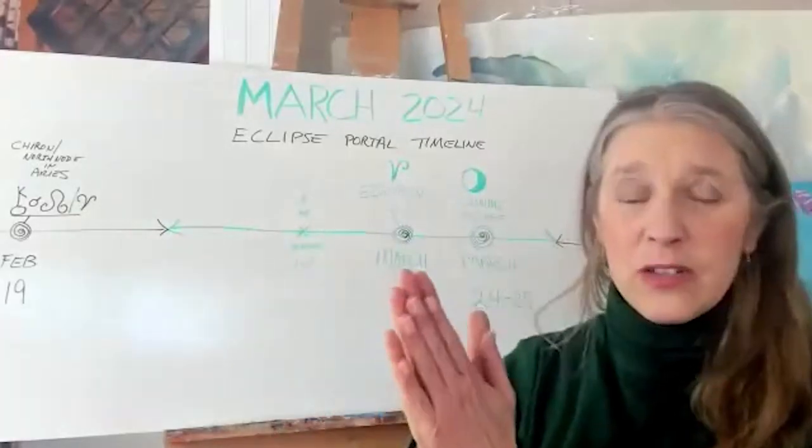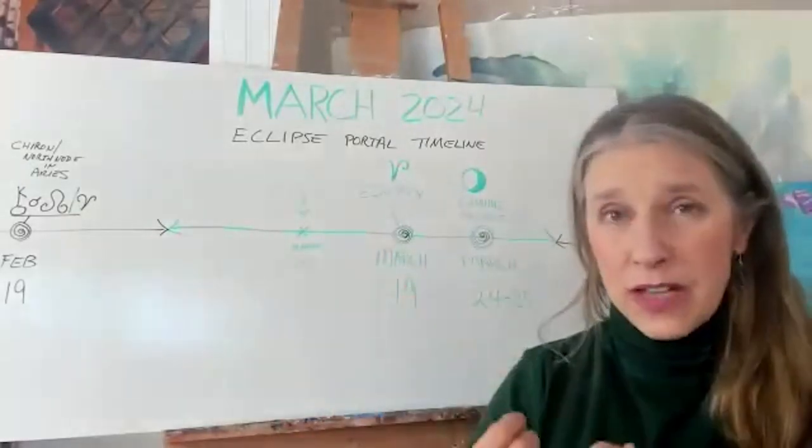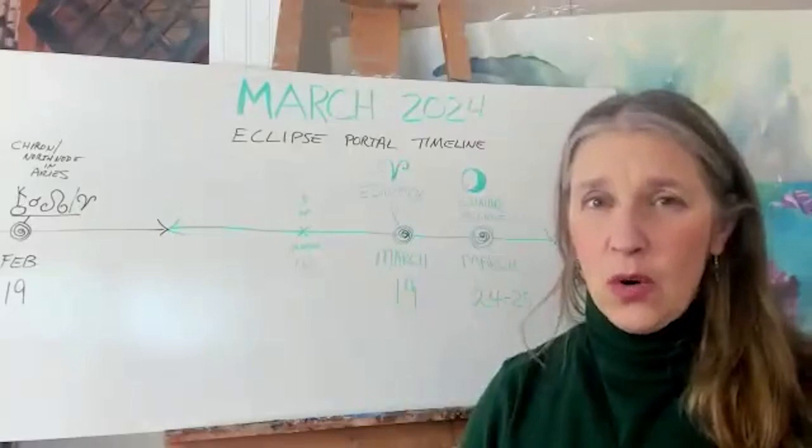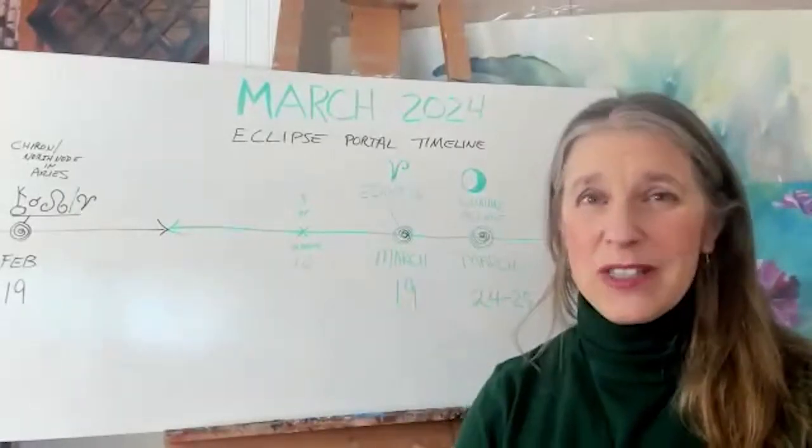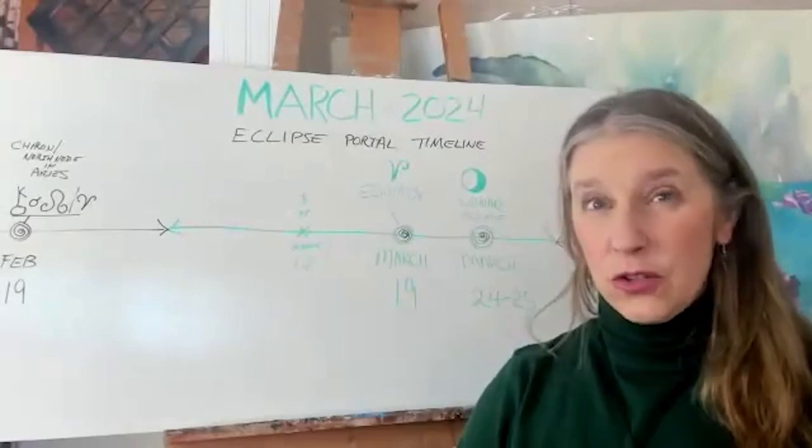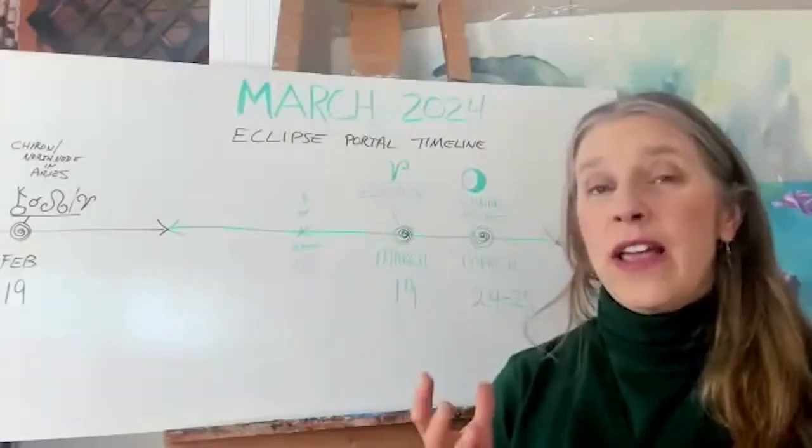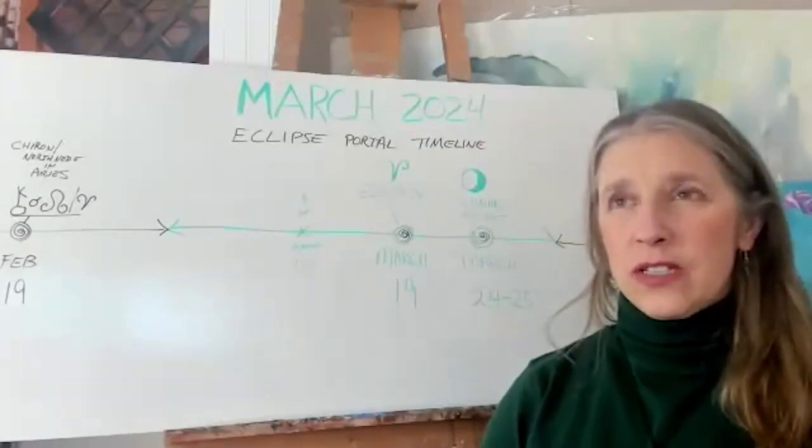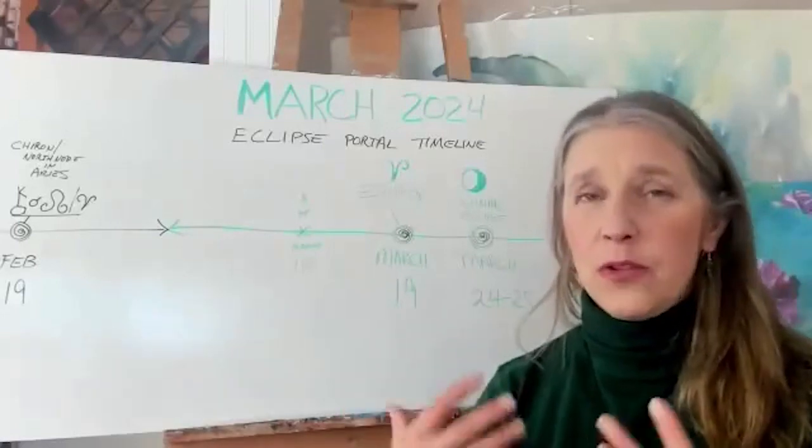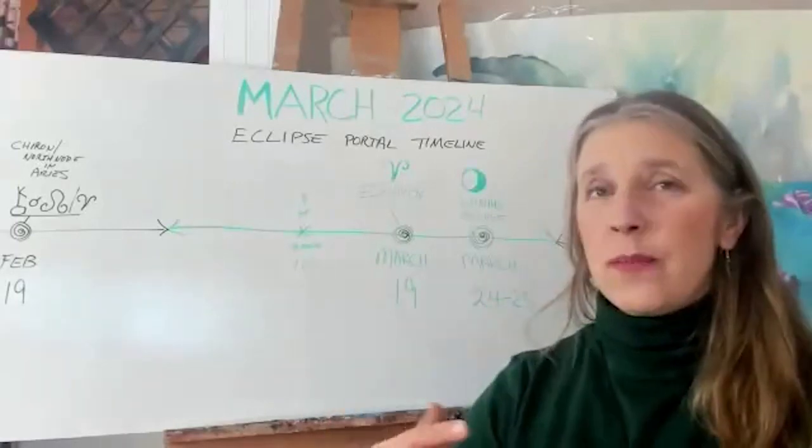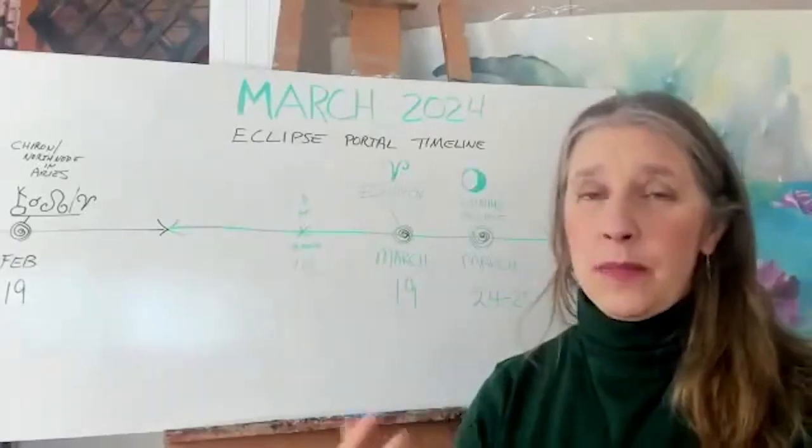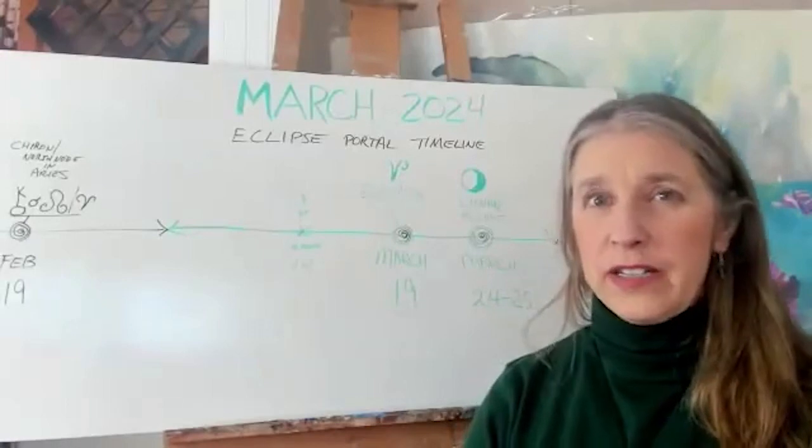Chiron is the wounded healer. What it represents is our deep core wounds, our psychic wounds, spiritual wounds that we've received during childhood and also ancestral wounds. Stuff coming up through the ancestral line that's karmic, that when Chiron shows up a lot of times these things will come up to be healed.